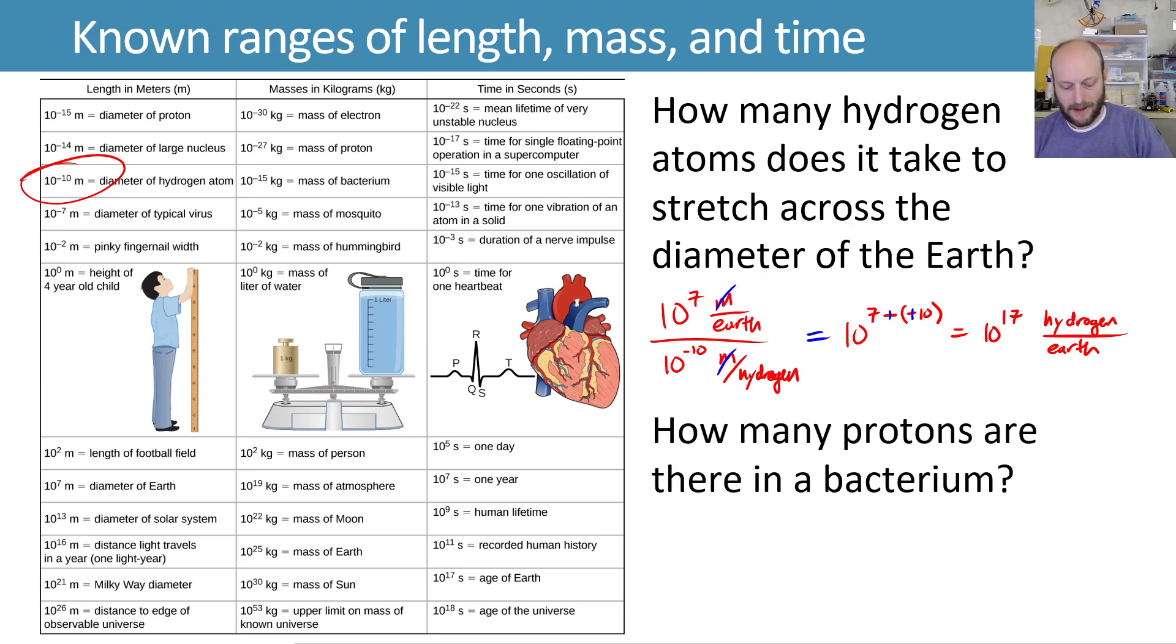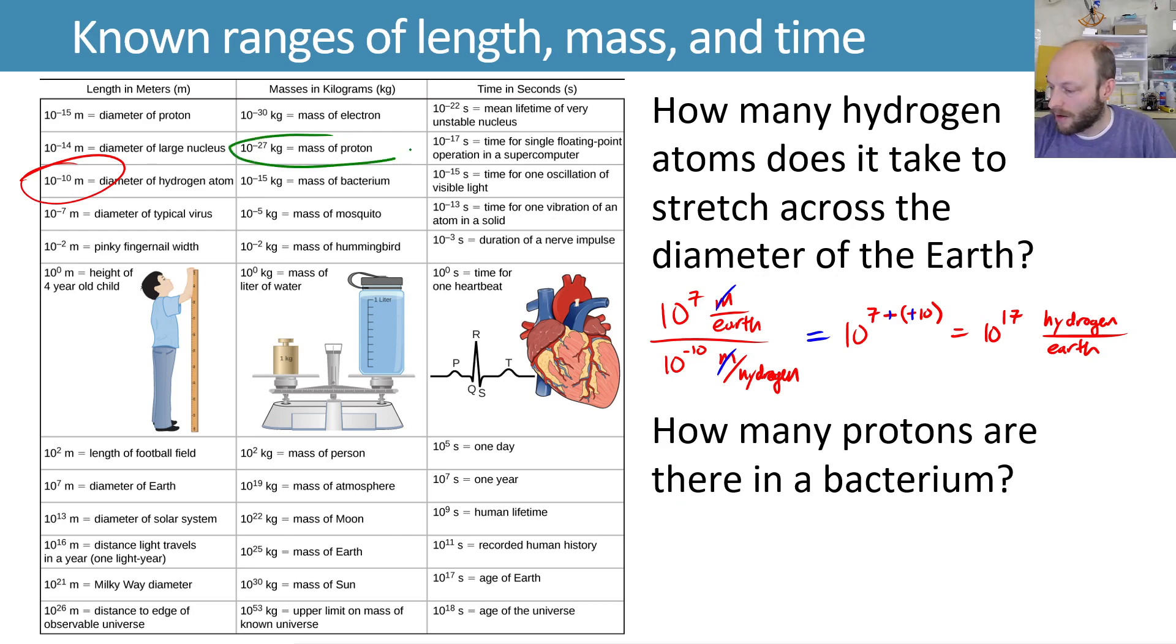Let's try another one. How many protons are there in a bacterium? If we have a certain mass of a proton and a certain mass of a bacterium, we can say that I have 10 to the minus 15th kilograms per bacterium, and then divide that by the 10 to the minus 27th kilograms of a proton.